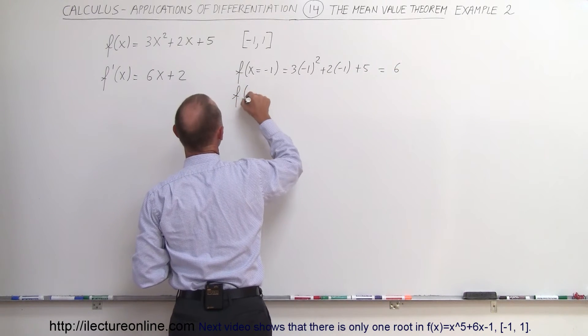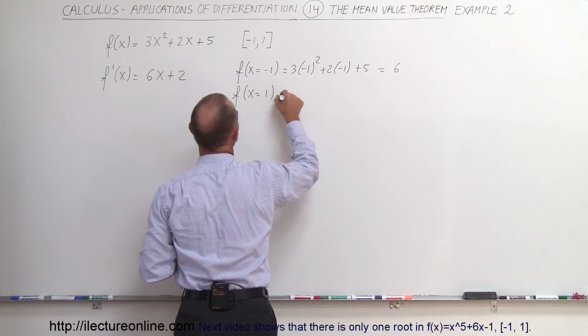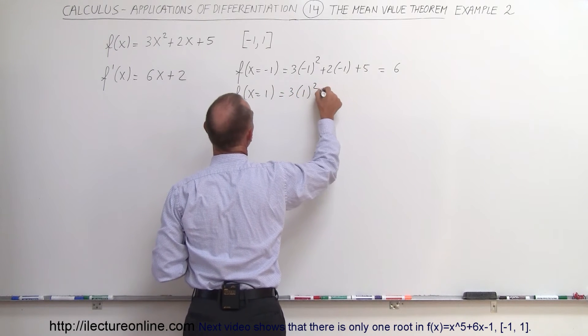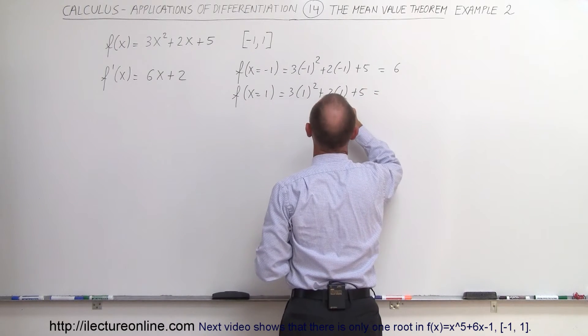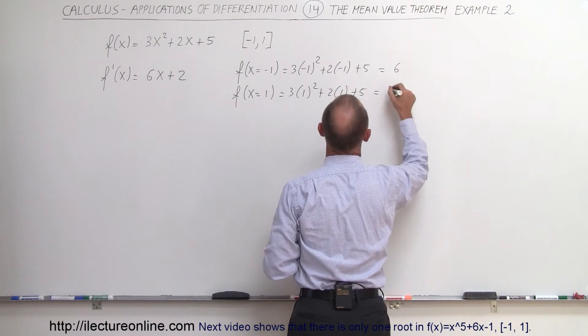We evaluate the function again but now for x equals 1, so 3 times 1 squared plus 2 times 1 plus 5. So this would be 3 plus 2 is 5 plus 5 is 10.